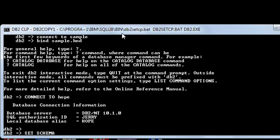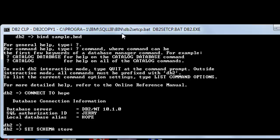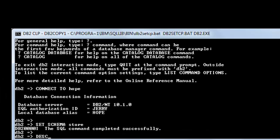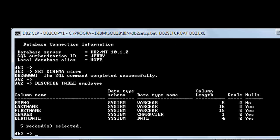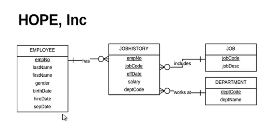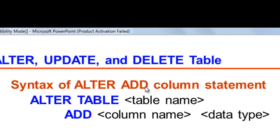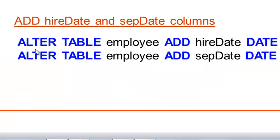Set schema star. Remember, from the previous example, we only have these particular columns on our table employee. But what is listed from our ERD is we need to include also a column for hire date and separation date. This would be our syntax in adding a column on a table. We need to issue an ALTER command — this would be the statement to add hire date and separation date.